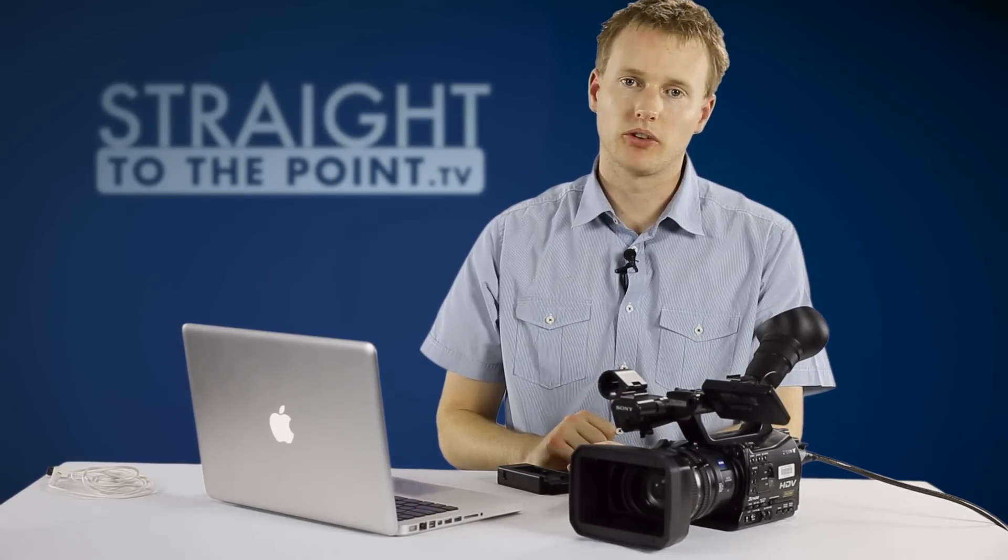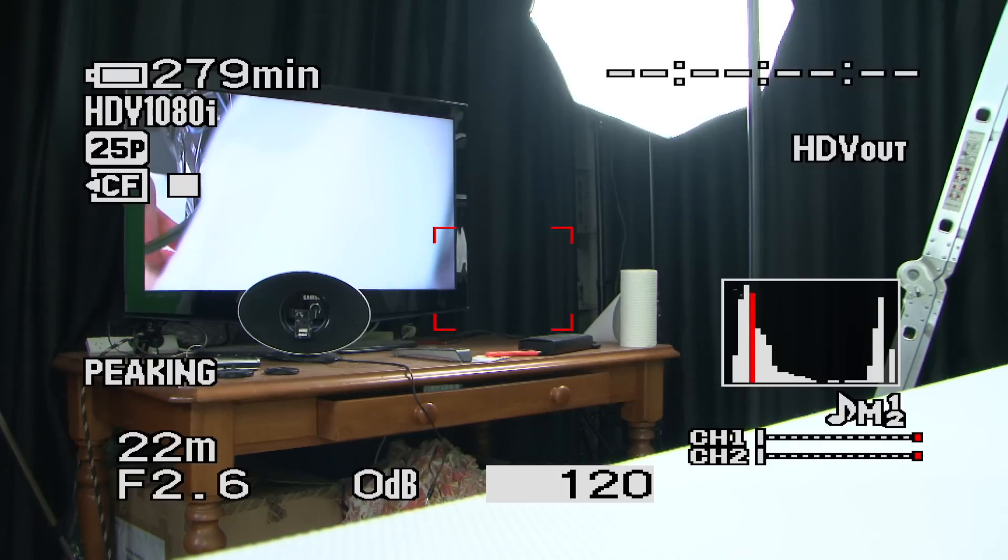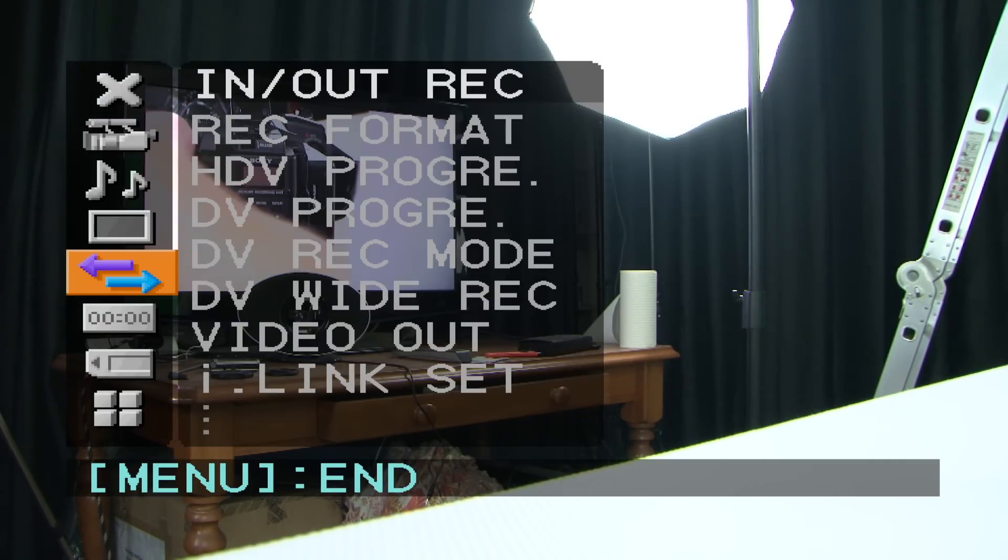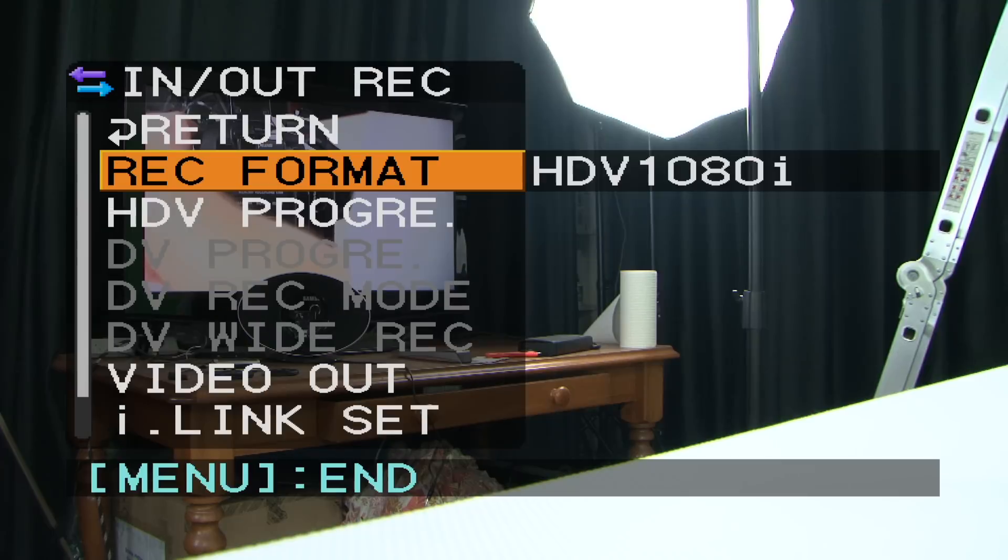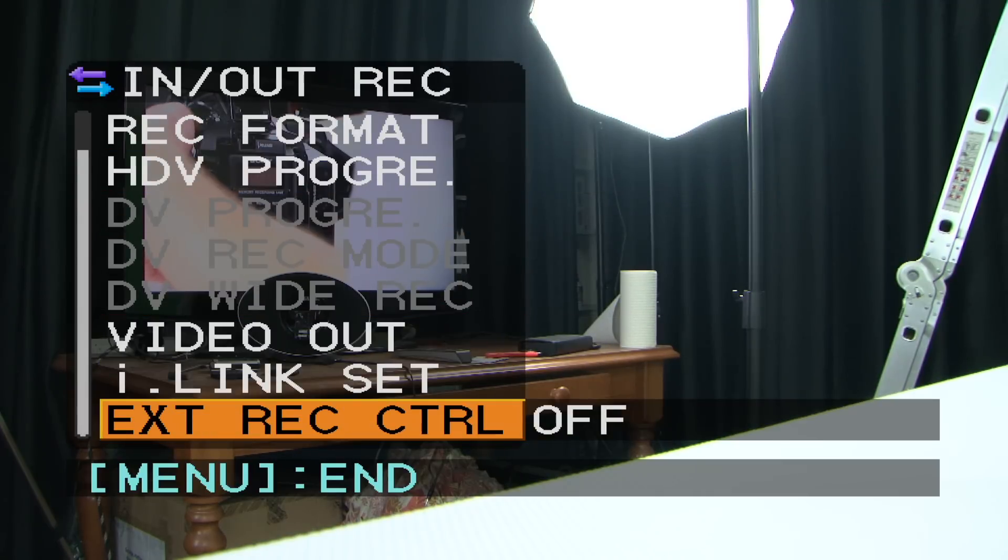So let's have a look at the camera side first. We'll have to go into the camera's menu and we'll scroll down till we get to the two opposite facing arrows, the in-out record menu, and I'll scroll all the way down to the bottom until we get to external recording control.